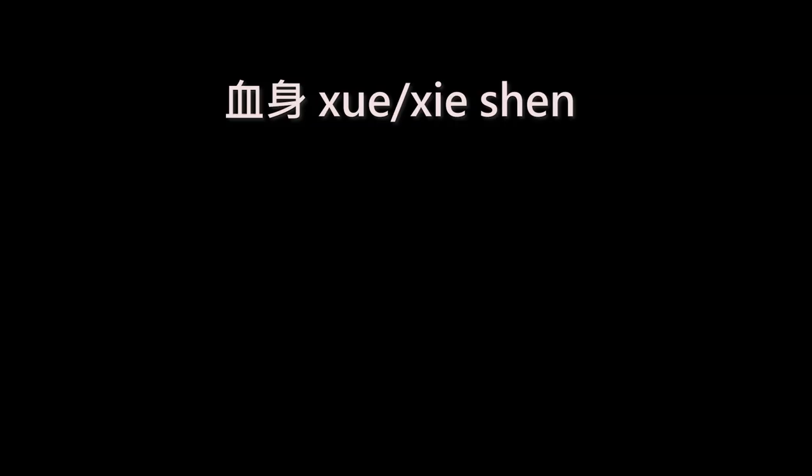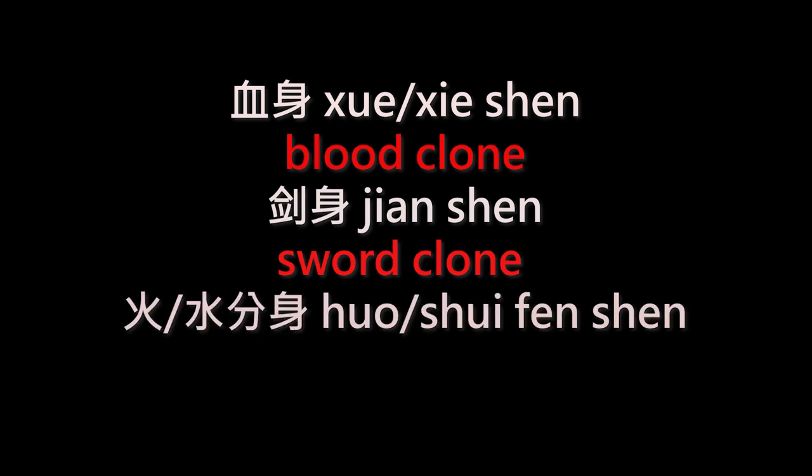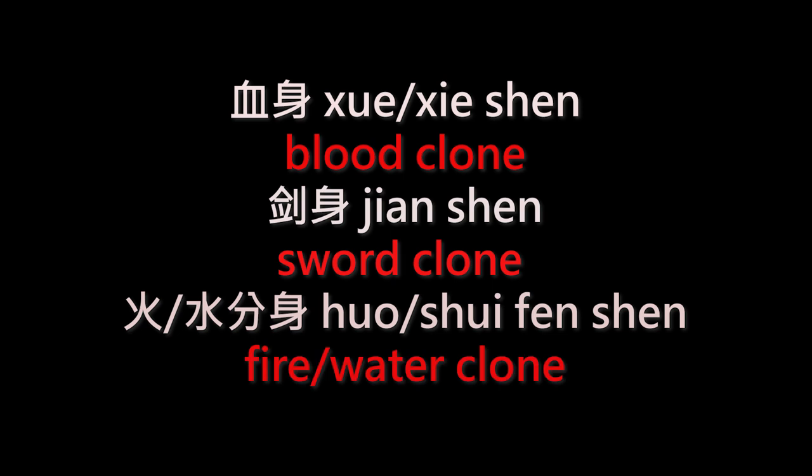It's actually possible to combine a lot of different characters with shen to make unique terms that are totally fantasy. I tend to use clone and then add another word to the beginning of it. For example, let's say they put the character for blood — xue — with shen, and that would be a blood clone. I've seen jian shen — jian is sword, so it could be a sword clone. Sometimes the authors will take fenshen and add another character in front of it, such as fire or water, to make a fire clone or a water clone. There are a handful of other ways to convey this concept, but these are the most common ones I see all the time.